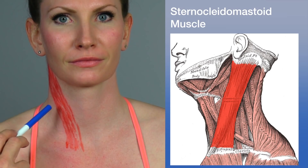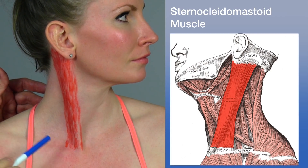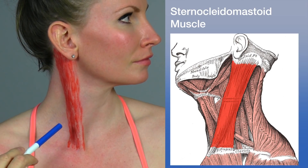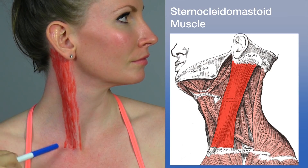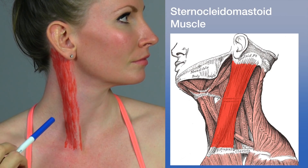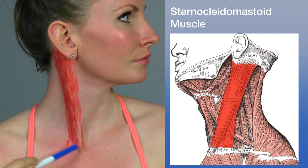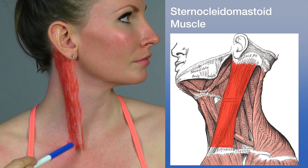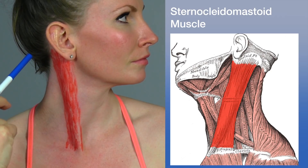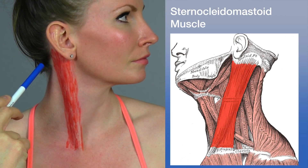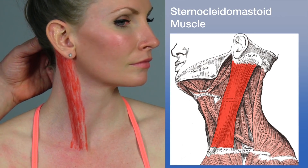Now let's go over the sternocleidomastoid — the largest and most important anterior muscle of the neck. As the name reflects, it has a dual origin on both the sternum and the clavicle near the junction of the manubrium, and it inserts on the mastoid process and the curved superior occipital line. Rotation of the head easily accentuates its visibility.